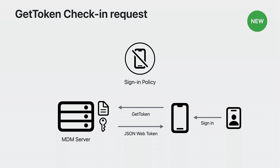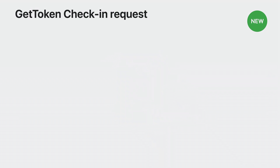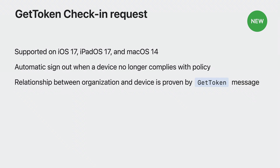Admins set the access management policy for their organization in Apple Business Manager or Apple School Manager. This policy will be applied to all managed Apple IDs belonging to the organization. When a managed Apple ID tries to sign into a device, the device requests the token using this GET token message from the MDM server that is managing the device. The MDM server will respond with a JSON web token that is signed by the private key. The device will then use this token during the sign-in flow to check the policy. Once the token is verified and if the user's device management state is compliant with the organization's sign-in policy, the user is successfully signed in.